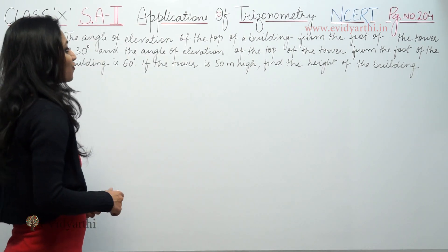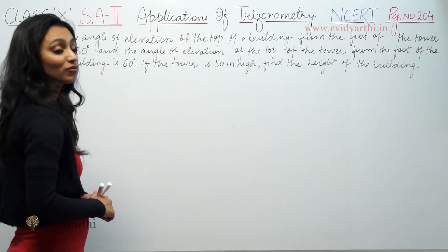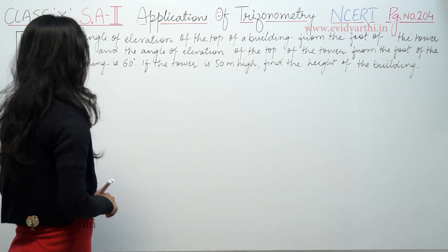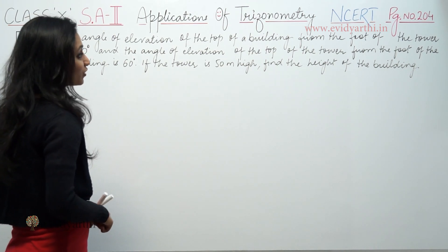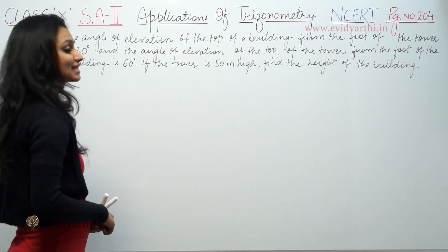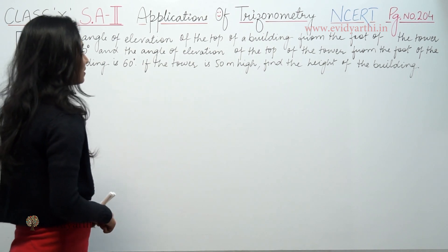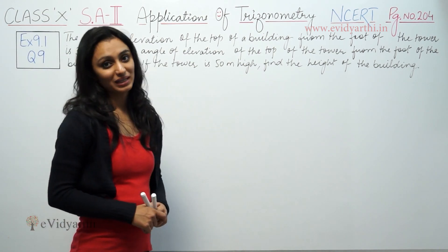The angle of elevation of the top of a building from the foot of the tower is 30 degrees, and the angle of elevation of the top of the tower from the foot of the building is 60 degrees. The tower is 50 meters high. Find the height of the building.